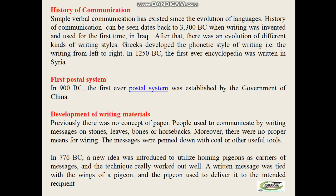Later on, other civilizations including Rome, Persia, Syria, and Egypt also contributed towards the progress of the postal system. Horses were used as the main carrier in this early postal system. They relied on relay stations established where horses were required to deliver the information.